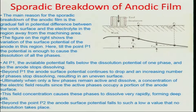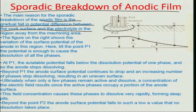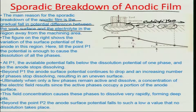The other criterion causing poor surface finish is the sporadic breakdown of the anodic film. The main reason for this is the gradual fall in the potential difference between the work surface and the electrolyte in a region away from the machining zone. The electric field between the tool and work piece falls as a function of distance squared, so the field available at increasing distances from the machining zone decreases, while electrolyte continues to flow over these regions creating a field between tool and work.